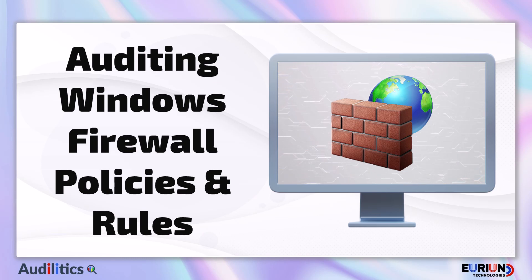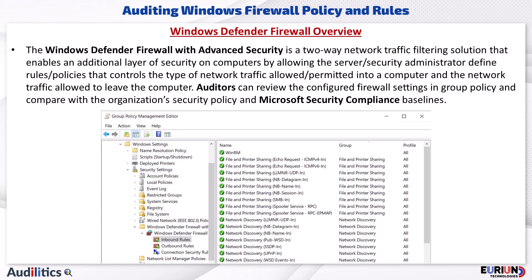Auditing Windows Firewall Policies and Rules. The Windows Defender Firewall with advanced security is a two-way inbound and outbound network traffic filtering solution that enables an additional layer of security on computers by allowing the server or security administrator to define rules or policies that control the type of network traffic allowed into a computer and the network traffic allowed to leave the computer.